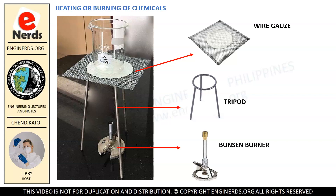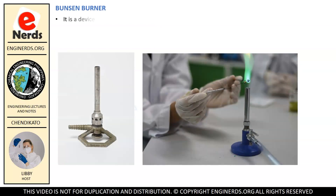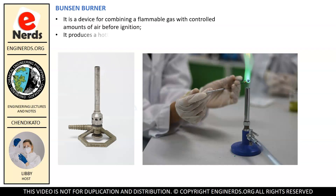First we have the Bunsen burner. It is a device for combining a flammable gas with controlled amounts of air before ignition. It produces a hotter flame than would be possible using ambient air and gas alone.